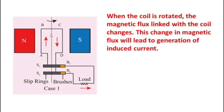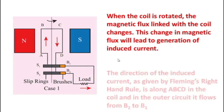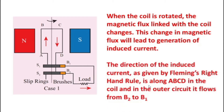When the coil is rotated, it moves from outward to inward, and the magnetic flux linked with the coil changes. The movement of the coil relative to the stationary magnet causes the magnetic flux to change, which leads to generation of induced current. The direction of the induced current is given by Fleming's right hand rule: the forefinger indicates the direction of magnetic field, the thumb indicates the direction of motion of the conductor, and the middle finger indicates the direction of induced current.